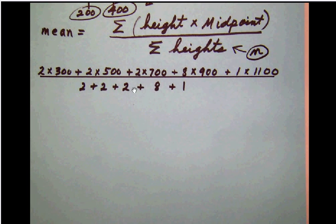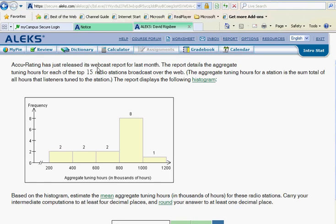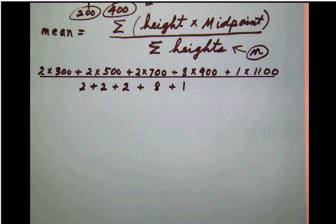So here I showed adding those heights together, 2 plus 2 plus 2 plus 8 plus 1. But if you notice in ALEKS here, they're telling us that the top 15 radio stations—that's our sample size anyway—so that these numbers will in fact add up to 15. So let's go ahead and do a little bit of work back here and add a step to this problem, and let's start crunching out some of the math.